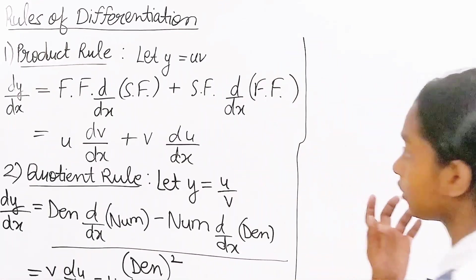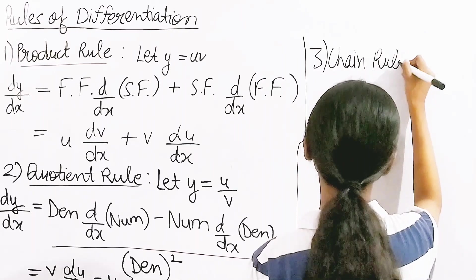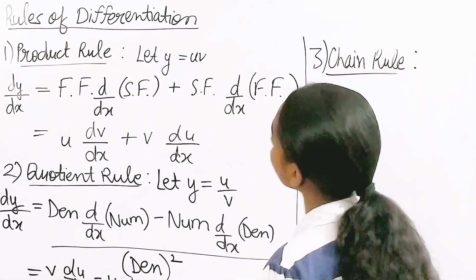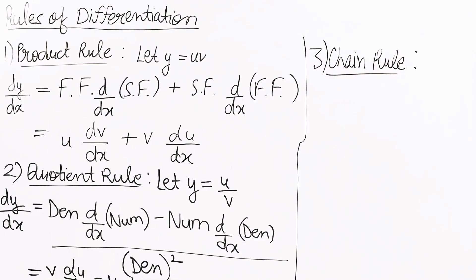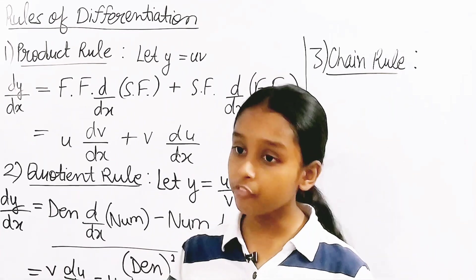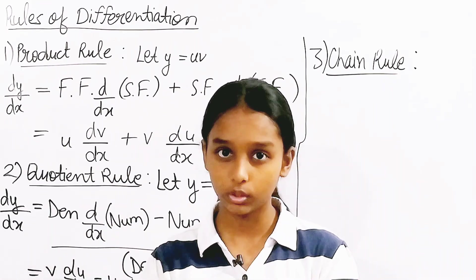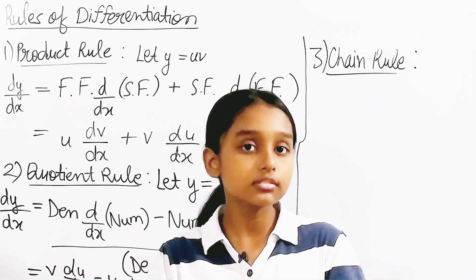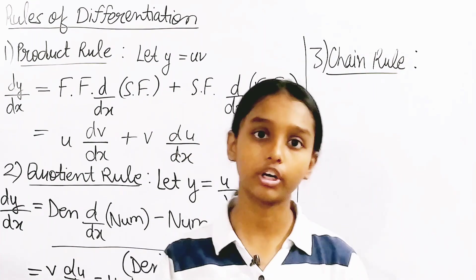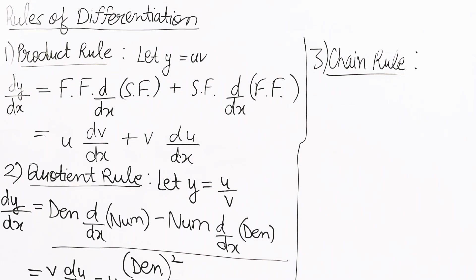Now the third one we're going to discuss is the chain rule. In the chain rule we have a different kind of case. Think about the word 'chain' — something connected, isn't it? Let's discuss it further. The camera is clear so let's move on with our chain rule.